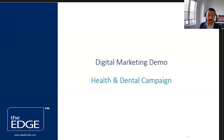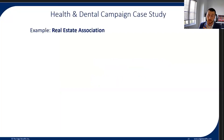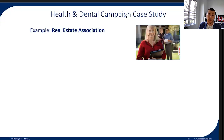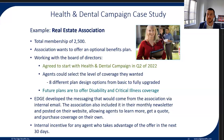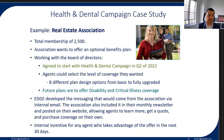Let me walk through a quick demo. This is an example using a real estate association with 2,500 people — the association wanted to offer an optional benefits plan. We've done this for a few real estate brokerages across the country. Working with the board of directors, we agreed to start a health and dental campaign in Q2 of last year. Agents could select from eight different plan design options — from the most basic to a fully upgraded plan — with disability and critical illness planned as future campaigns.